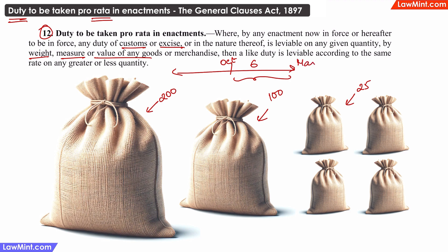Therefore, the tax payable will be pro-rata for 6 months for that year, that is 6,000 rupees. For the next year, because we are talking about a full financial year, the full 12,000 rupees will be payable.